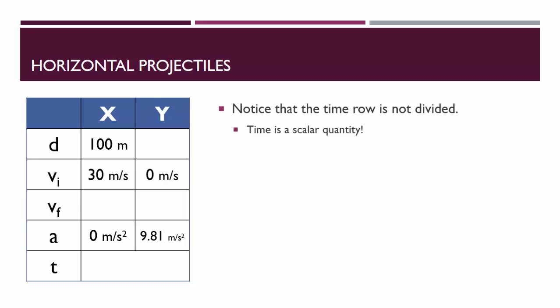In this specific problem, we have enough information in the X column. We know enough about the horizontal motion of this object to figure out how long it took to travel 100 meters horizontally if it was originally traveling at 30 meters per second and moved with an acceleration of zero.